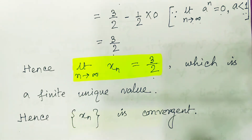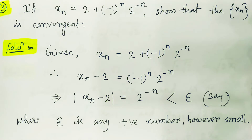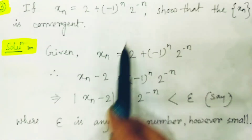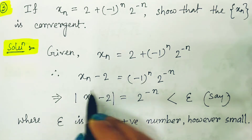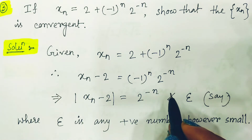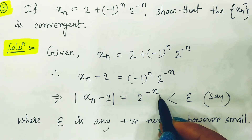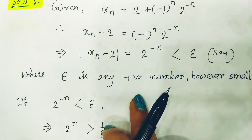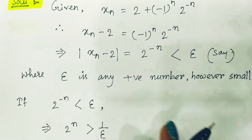Now for the next example, we find whether the given sequence is convergent using the definition of the limit. Given xn, we can write |xn - 2| equals 2^(-n), because (-1)^n becomes positive when we take the absolute value. We assert this is less than epsilon, where epsilon is a small positive number.